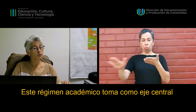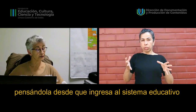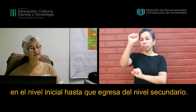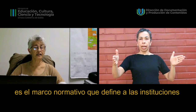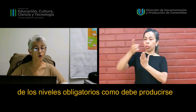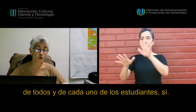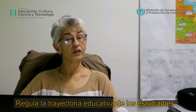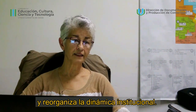Este régimen académico toma como eje central la trayectoria real del estudiante, pensándola desde que ingresa al sistema educativo en el nivel inicial hasta que egresa del nivel secundario, en términos de una unidad pedagógica. Es el marco normativo que define a las instituciones de los niveles obligatorios cómo debe producirse el recorrido de la trayectoria escolar de todos y cada uno de los estudiantes. Regula la trayectoria educativa de los estudiantes como un elemento que estructura y reorganiza la dinámica institucional.